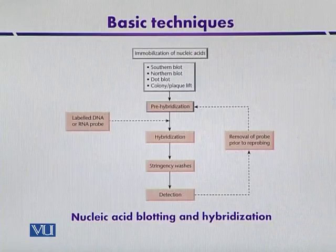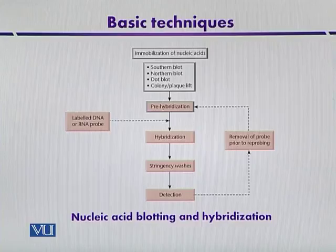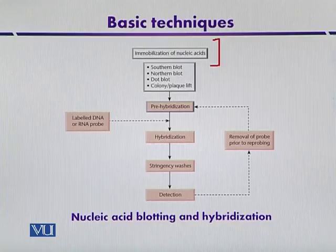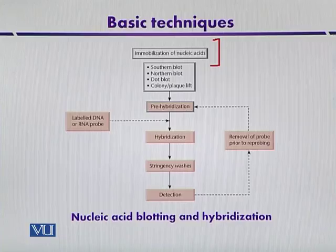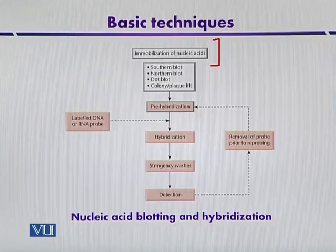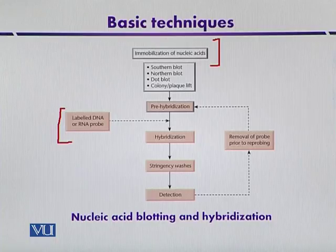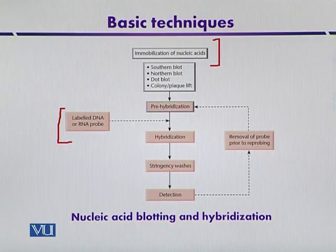This diagram shows nucleic acid blotting and hybridization. In the first step, the DNA is immobilized on the solid support — either a nitrocellulose membrane or nylon membrane. The DNA can also be denatured so that double-stranded DNA is converted into single-stranded form, and then it can be analyzed by southern blotting, northern blotting, or any other blotting type. The nitrocellulose membrane containing the denatured, single-stranded DNA is then placed in a solution containing the labeled probe — a segment of DNA or RNA labeled with a radioactive material like P-32.